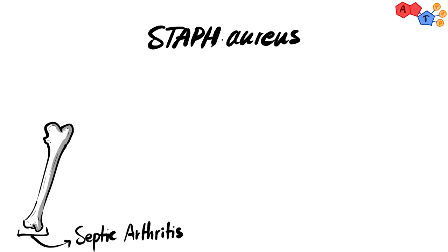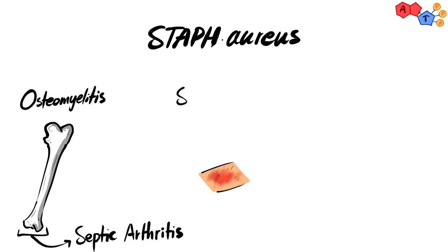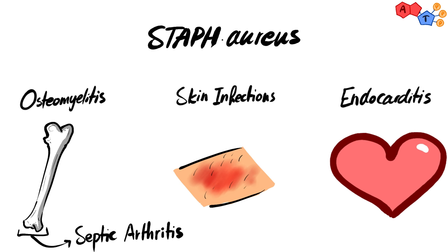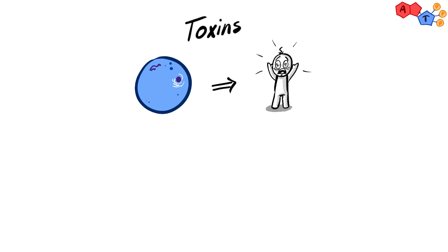Staph aureus is the most common cause of septic arthritis and osteomyelitis in adults. In addition to that, staph aureus can cause many skin infections, acute endocarditis — which is inflammation of the heart — and since staph aureus is normally present on skin, IV drug users are at higher risk of getting endocarditis.